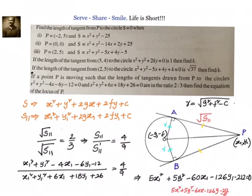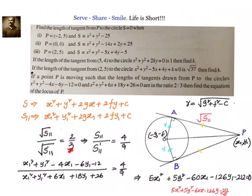That is the locus of the point moving such that the lengths of tangents drawn from P to circles S = 0 and S′ = 0 are in the ratio 2:3. We squared, cross-multiplied, and simplified. This completes the concept of length of tangent and related problems. Please do let me know your feedback. Thanks for your time and support. Bye for now.